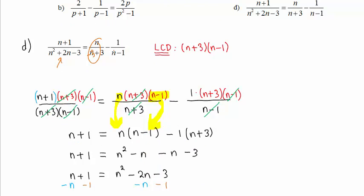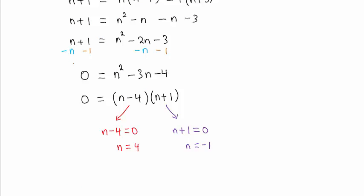Positive 1 would make this fraction have a 0 denominator and this fraction also. We did not get n equals 1 as a solution. Therefore, these two solutions indeed are the solutions.